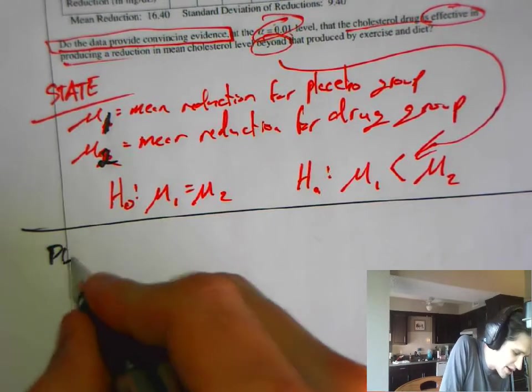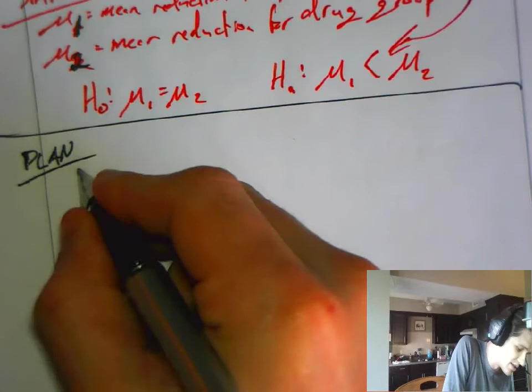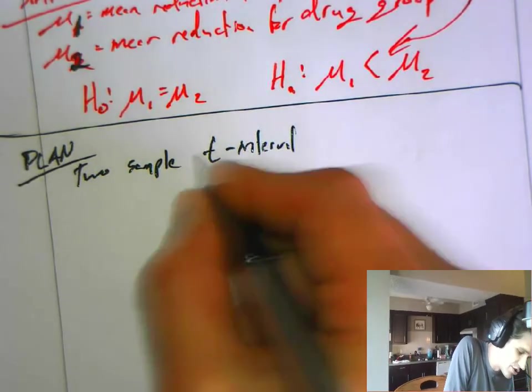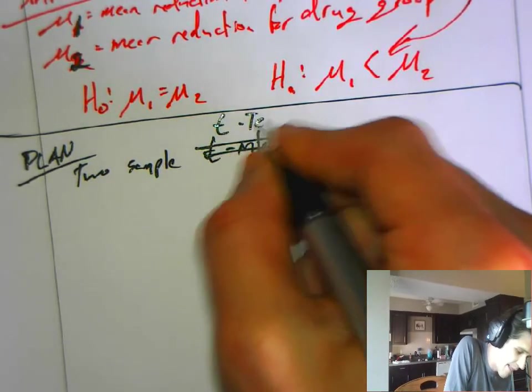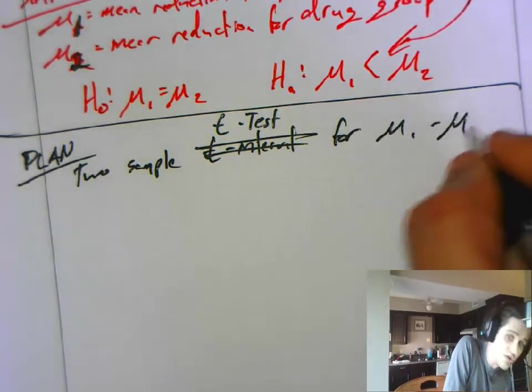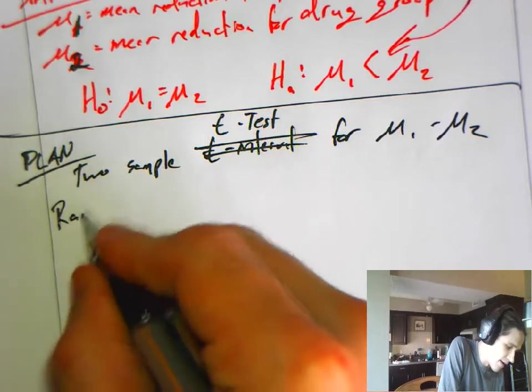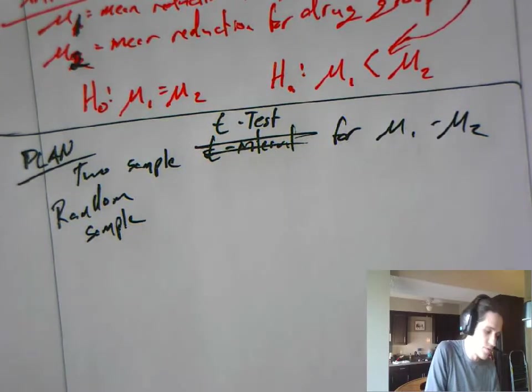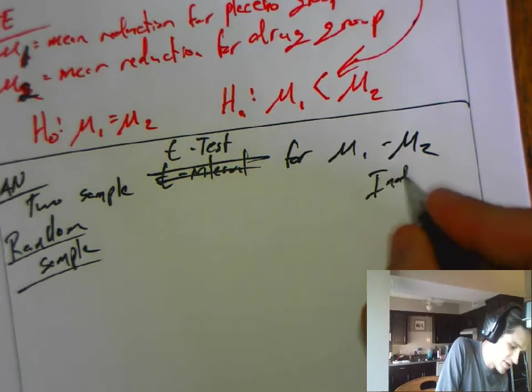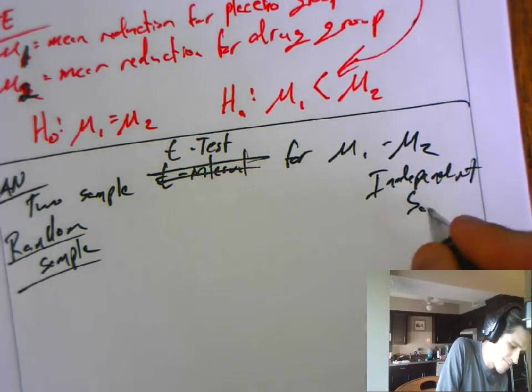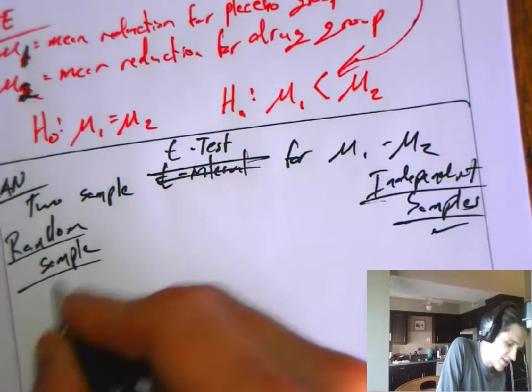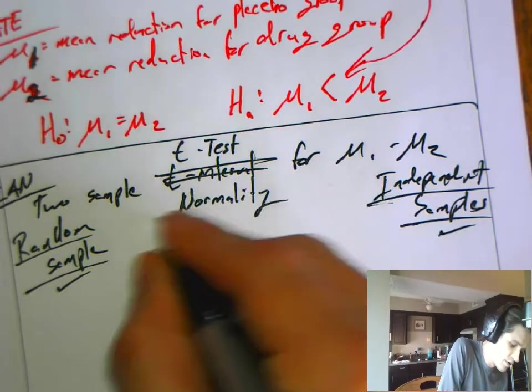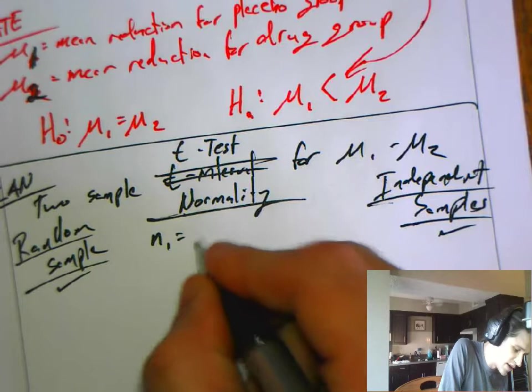And, what's the null hypothesis? I go in, and I assume the drug doesn't do anything. You have to go in saying, the drug probably doesn't do anything. I need evidence to show that it does do something. So, the null hypothesis, the mean reduction from the first group equals the mean reduction from the second group. I don't have any evidence yet that the drug is better than the standard of care. The drug plus this. This is a 2-sample t-test for mu1 minus mu2. And, we have our random sample. Yes, indeed. We have that they were independent samples. Yes, we were given that. And, the goofy one here, though, is going to be normality.